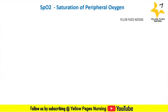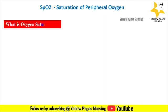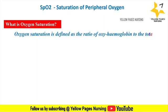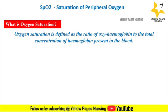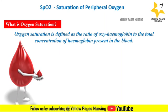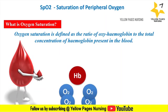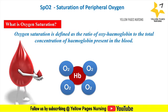SpO2 — that is, saturation of peripheral oxygen. Oxygen saturation may be defined as the ratio of oxyhemoglobin to the total concentration of hemoglobin present in the blood. Red blood cells contain hemoglobin. One molecule of hemoglobin can carry up to four molecules of oxygen, after which it is described as saturated with oxygen.